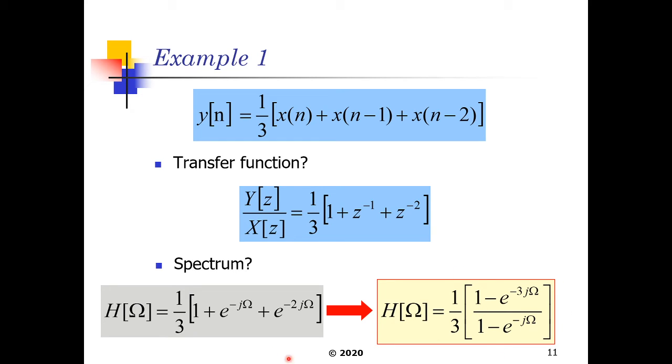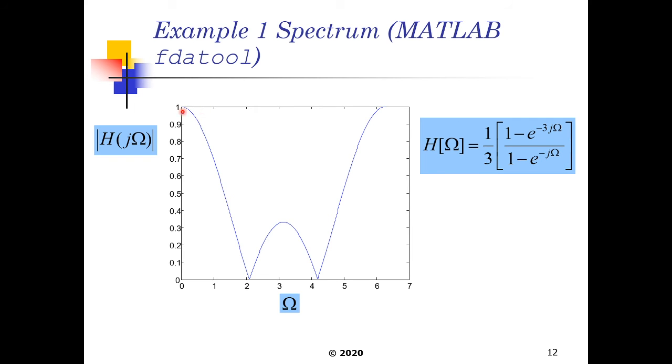If we plot the spectrum of this entire transfer function here in z to get our h omega frequency response, the spectrum looks like this here. Where at the Nyquist frequency, which is at the center, we have a mitigated magnitude, but our low frequencies here maintain the magnitudes accordingly.